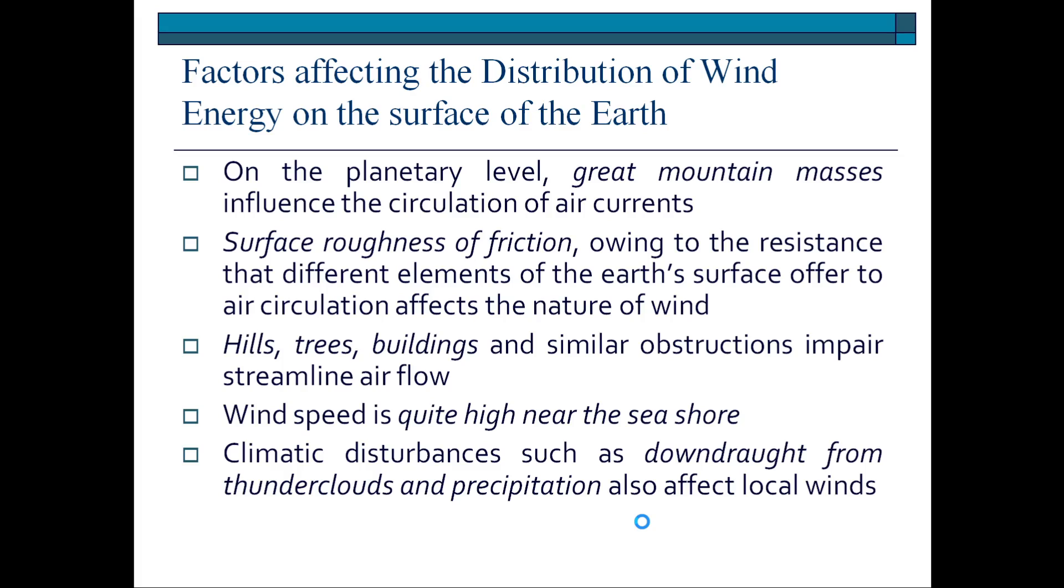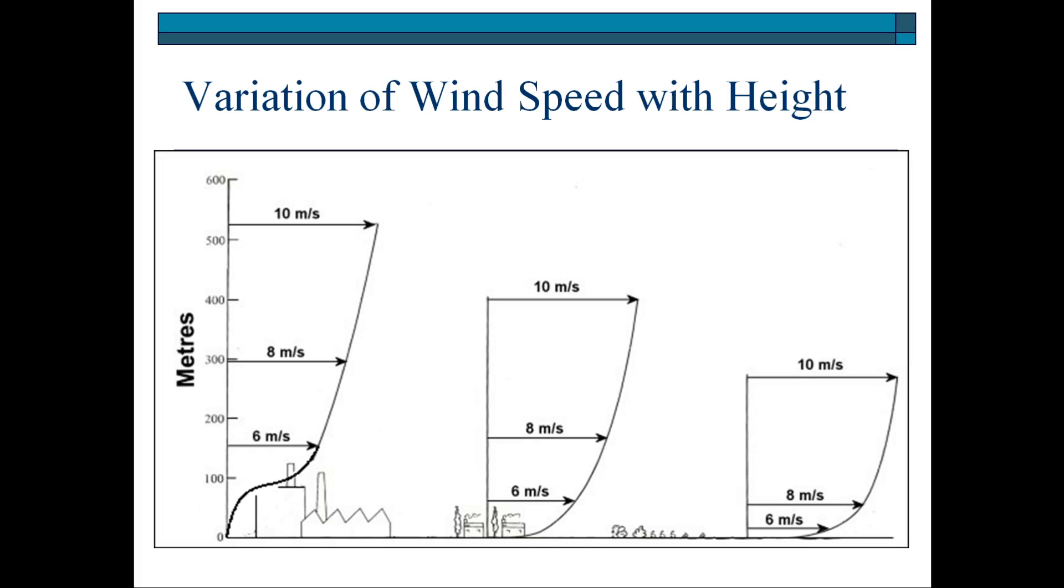This diagram will show you the variation of wind speed with height - when you go up from the surface of the earth, how the wind velocity is affected in different conditions. On the y-axis you can see the meters, on the x-axis you can see different hindrances.